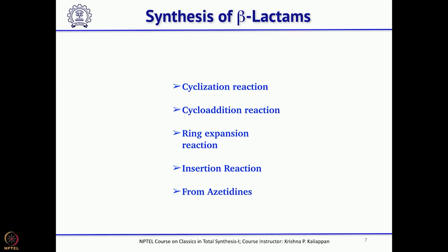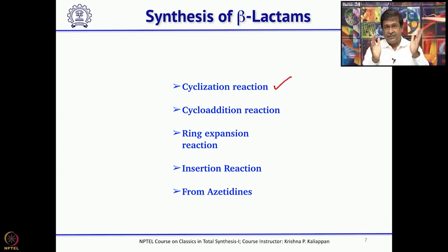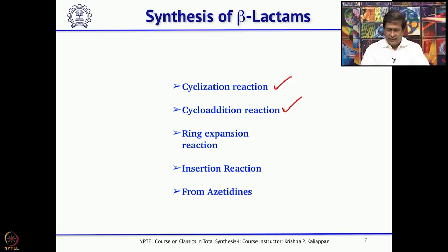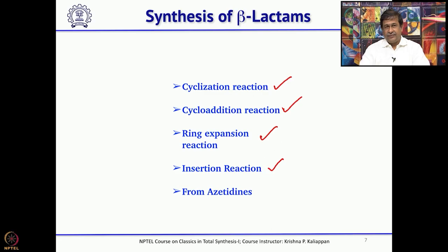There are 5 common reactions used to make beta-lactams: (1) intramolecular cyclization to form the 4-membered ring; (2) cycloaddition — specifically 2+2 cycloaddition; (3) ring expansion from a 3-membered ring to a 4-membered ring; (4) insertion reaction — either carbon insertion or nitrogen insertion; and (5) synthesis from azetidates. These five reaction types are routinely used to prepare various beta-lactams.